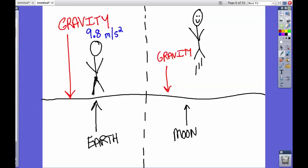The gravity on Earth is 9.8 meters per second squared. That is, in theory, how fast you are pulled down to Earth. However, on the Moon it's one-sixth the gravity of Earth, so the gravity is about 1.63 meters per second squared.